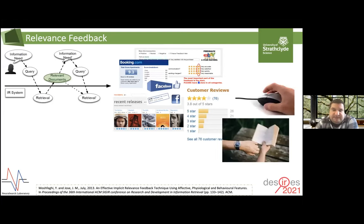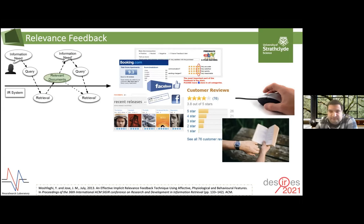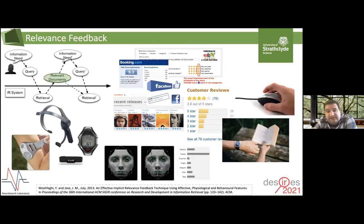So another method of gathering feedback was introduced, named implicit feedback, where the relevance of a document was inferred by the interaction that the user is doing with the search system and the results. For example, researchers have looked into click-through data and dwell time. Other researchers have looked into facial expression and physiological features as a source of feedback. But these measures are looking at understanding the concept of relevance in an indirect way.